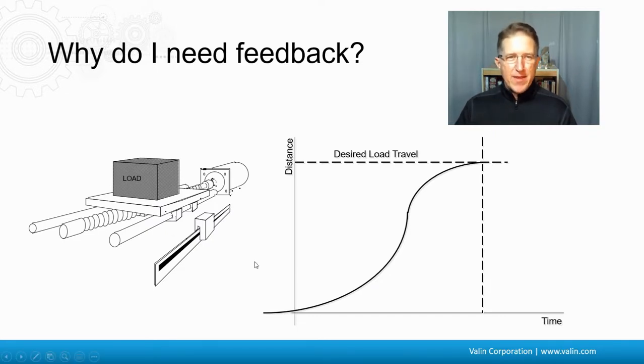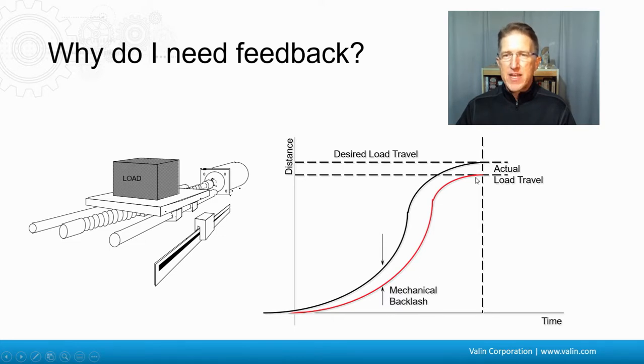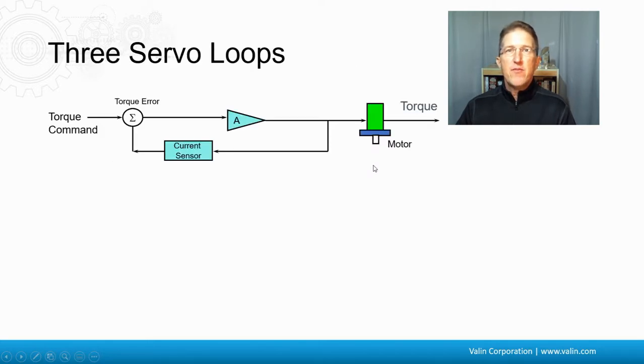Why do I need that feedback? Let's take a look at a ball screw actuator that has a load on it. And here's a linear encoder. Again, this is not on the back of the motor, but it could be. But this is easier to understand that there's a linear encoder on here. So if this is the distance and this is the desired travel as it goes over time, perhaps it doesn't quite actually get there because there's an actual load travel and there's some mechanical backlash. And that creates an error between the actual load travel and the desired load travel. So that feedback gives us an opportunity to adjust for that.